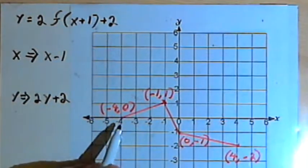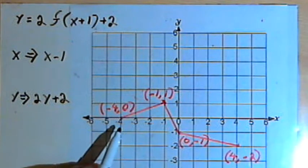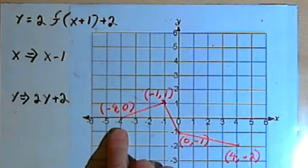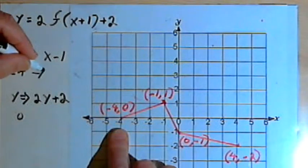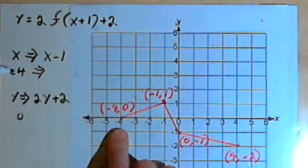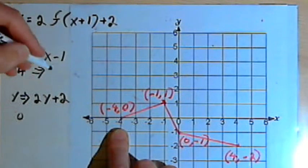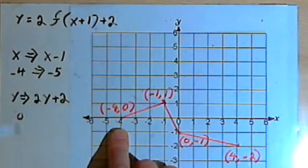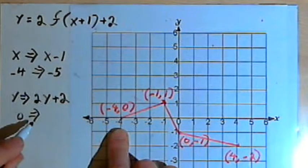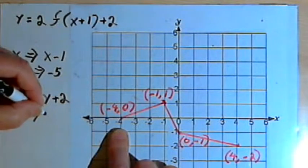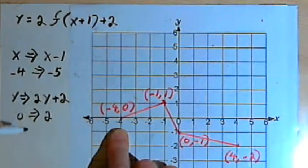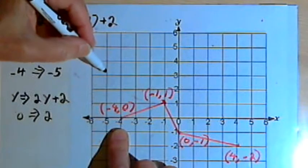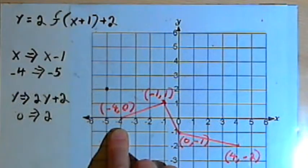I'll go to each of the marked points and see where they move to. I've got a point at negative 4, 0. The x-coordinate, negative 4, is going to become negative 4 minus 1, so that would be negative 5. The y-coordinate, 0, is going to get multiplied by 2 — that's still 0 — and we add 2 to it, so that becomes positive 2. That means I'll have a point at negative 5, 2. There's negative 5 and there's 2, so I've got a point right here.